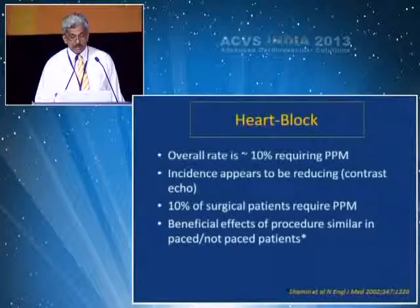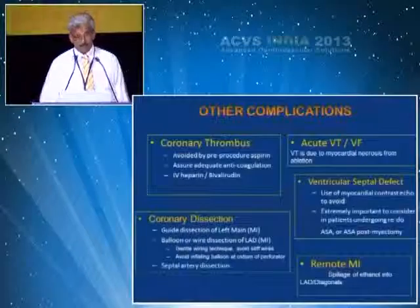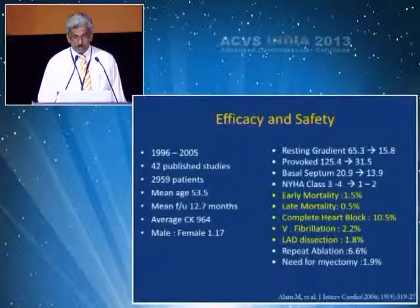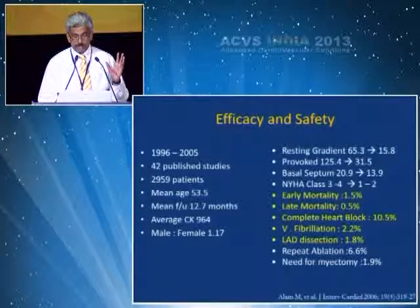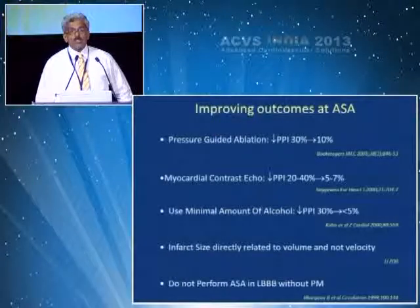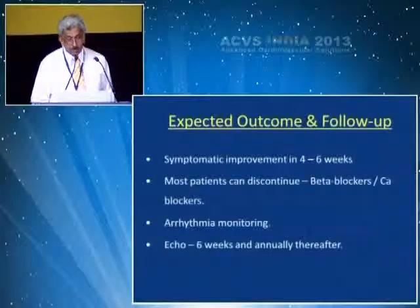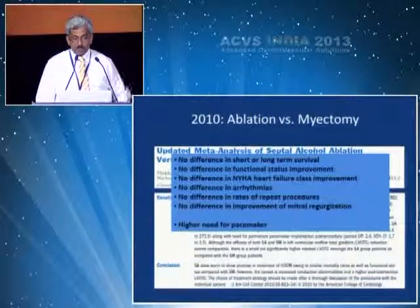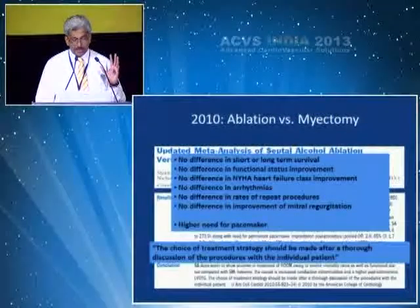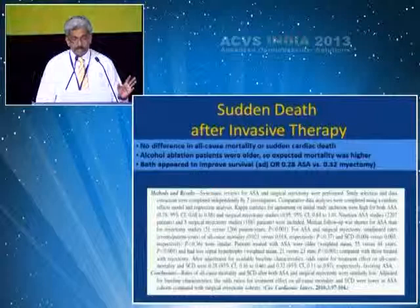Heart block occurs in about 10% — the same rate as for surgical patients. Risk factors for heart block include elderly age, female gender, higher injection volume of alcohol, more than one septal artery treated, and absence of myocardial contrast echo guidance. The efficacy and safety are very good: early mortality is 1.5% and late mortality is 0.5%. Gradients are usually sustained at long-term follow-up; improving outcomes are driven by pressure-guided ablation over multiple sessions. Symptomatic improvement occurs at 4 to 6 weeks. Compared to myomectomy, there is no difference in symptoms but a slightly higher need for pacemaker; there is no difference in mortality or sudden cardiac death, and both improve survival.